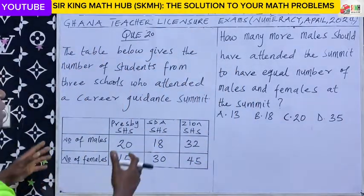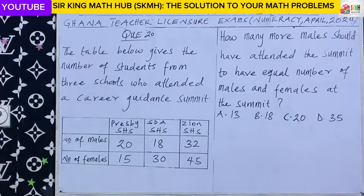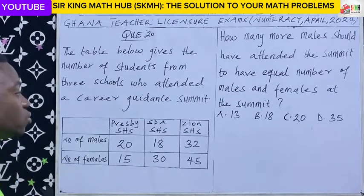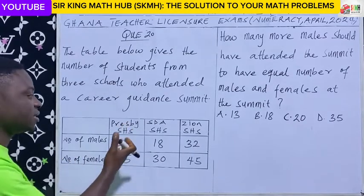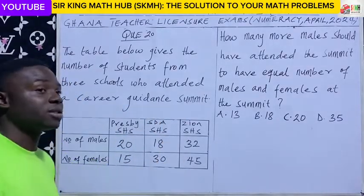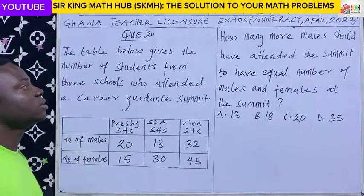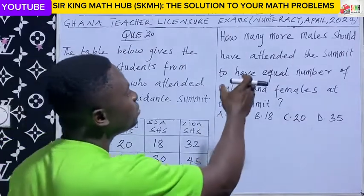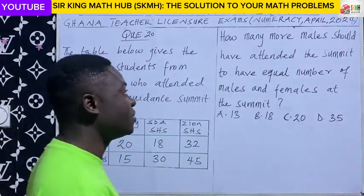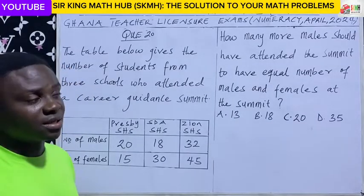Question 20. A table has been given, and this table gives us information concerning the number of students from three different schools — Presby SHS, SDSHS, and SIRM SHS — who attended a Career Guidance Summit. So how many more males should have attended the summit to have an equal number of males and females at the summit?